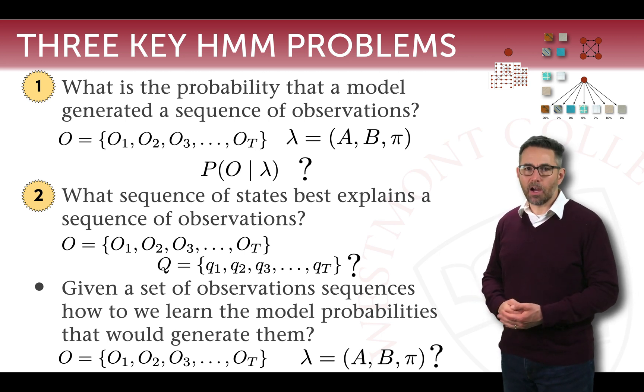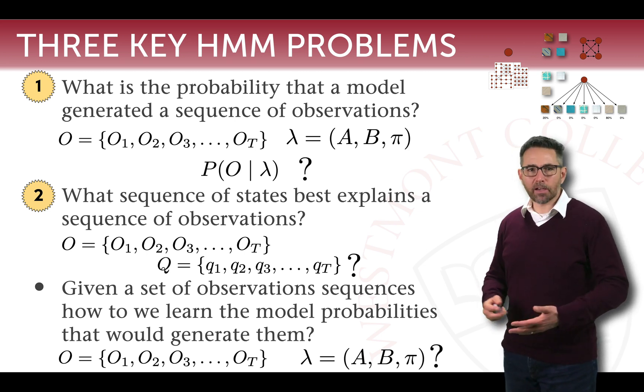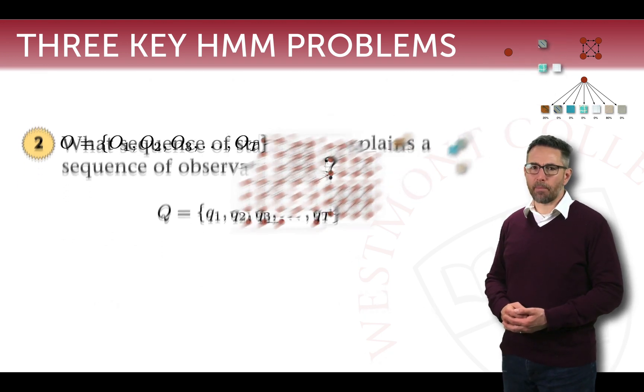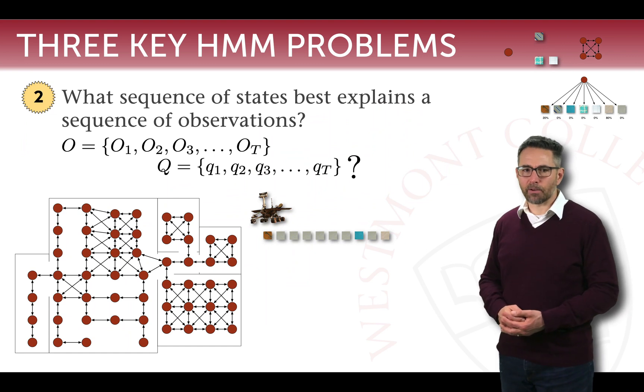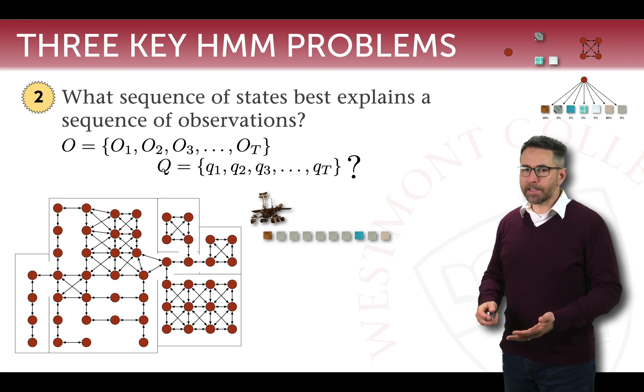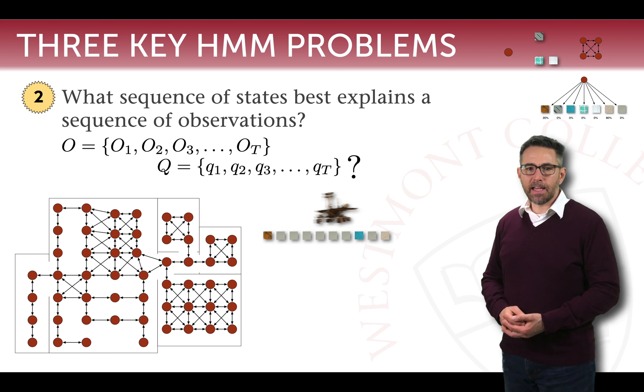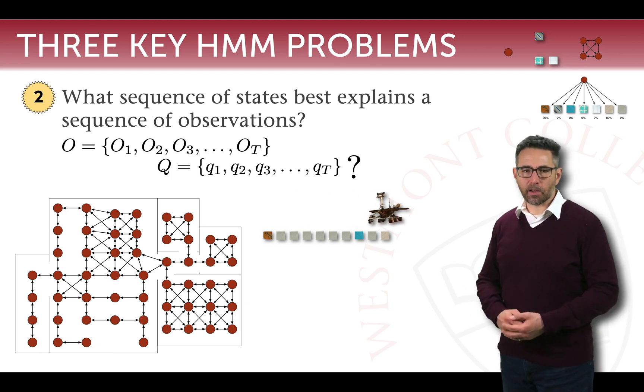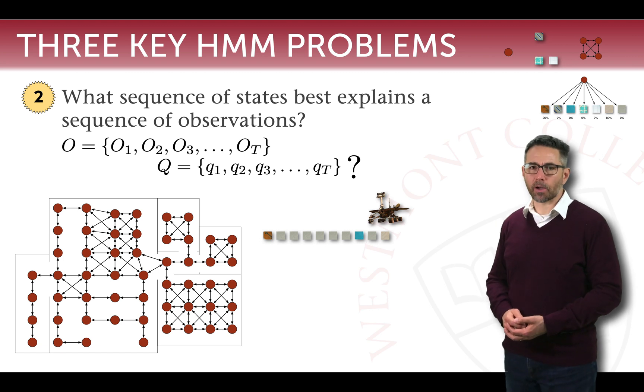For our robot case, this would say, given that we see a sequence of rug coverings, how did we move through our apartment such that we saw them? Very common and probably the most common question that's asked about hidden Markov models. To elaborate, our robot might be in the world. The robot doesn't know where it is except by observing floor coverings. It sees a sequence of floor colorings and wants to try and figure out what path did it follow in order to see those floor coverings.